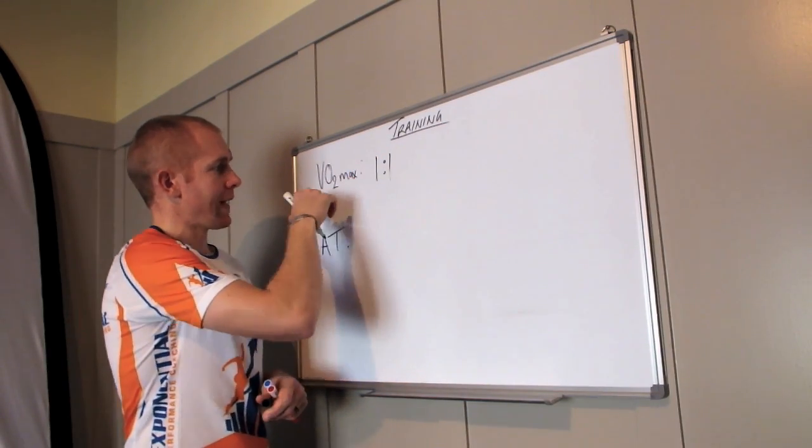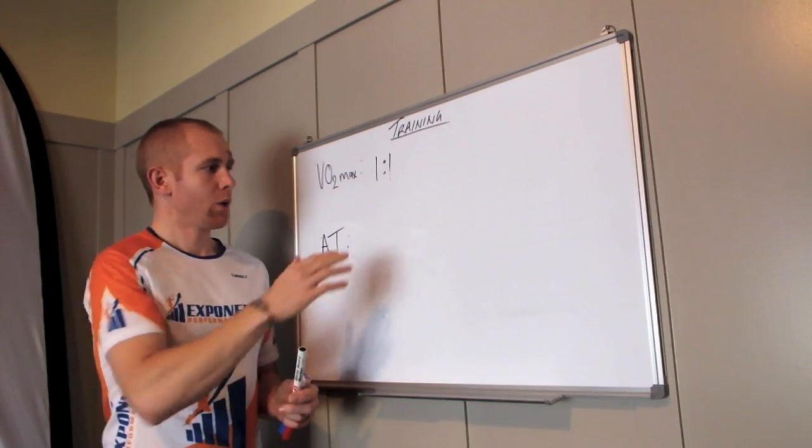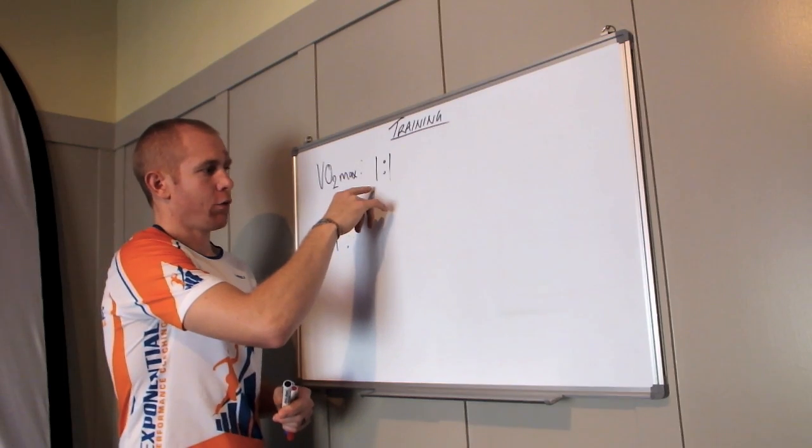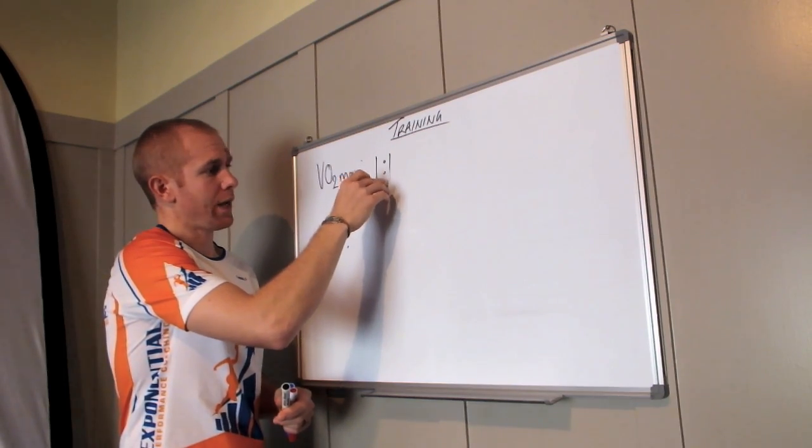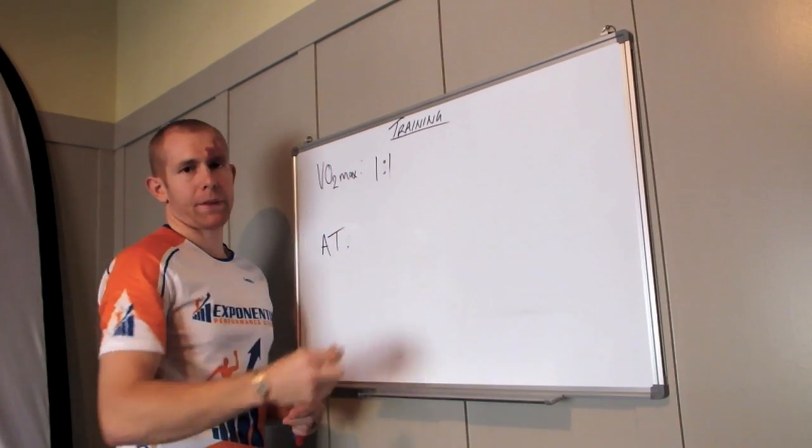So when we're doing our VO2max intervals, we want a one-to-one work-to-recovery ratio. That means if we work for two minutes, we have two minutes of recovery. If we work for one minute, we have one minute of recovery.